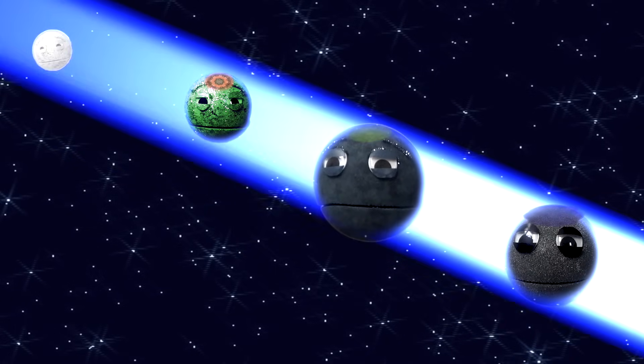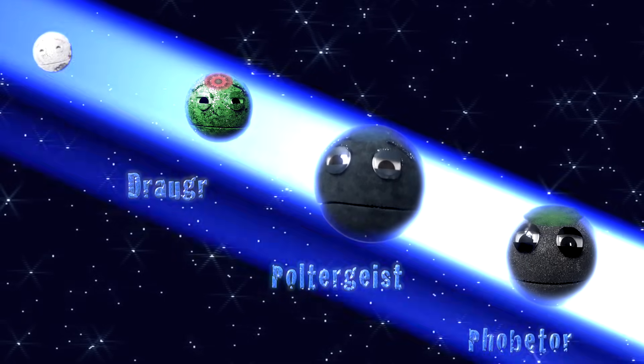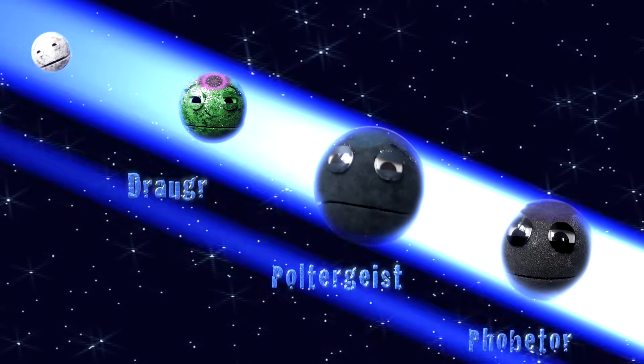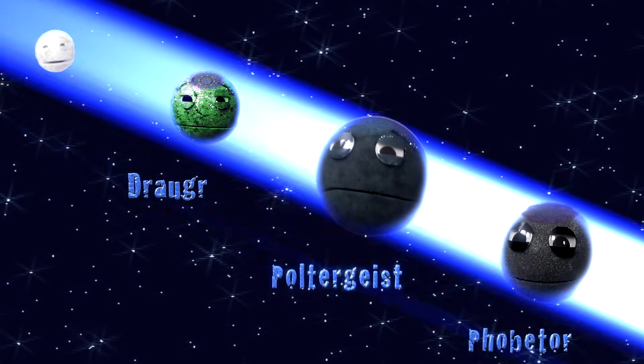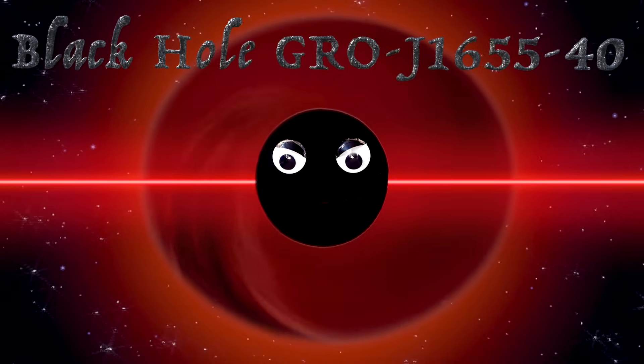I have three undead planets that orbit me, that I continually zap with my radiation energy. Their names are Draugr, Poltergeist, and Phobetor. And my constant pulses light up auroras in their skies like the northern lights.